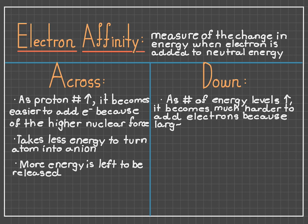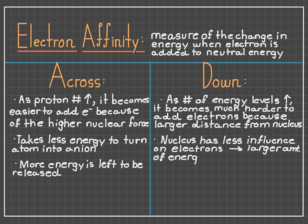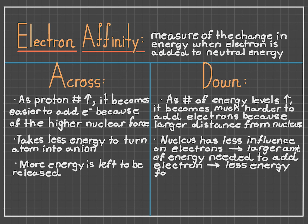As the number of energy levels increases as we go down, it becomes much harder to add the electron because the nucleus has a diminished attraction to electrons due to the greater atomic radius. This means that there's going to be a larger amount of energy needed to actually integrate the electron into the atom, leaving less energy for the atom to release. This means that electron affinity is going to diminish as we go down.